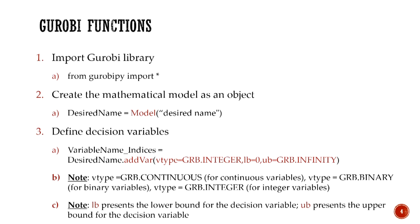Integer decision variables can take on 0, 1, 2, 3, and so on. We also pass two other arguments, LB and UB, which refer to lower bound and upper bound. The lower bound for our model is 0 — the non-negativity constraint — and the upper bound can be infinity, specified using the reserved word GRB.INFINITY.